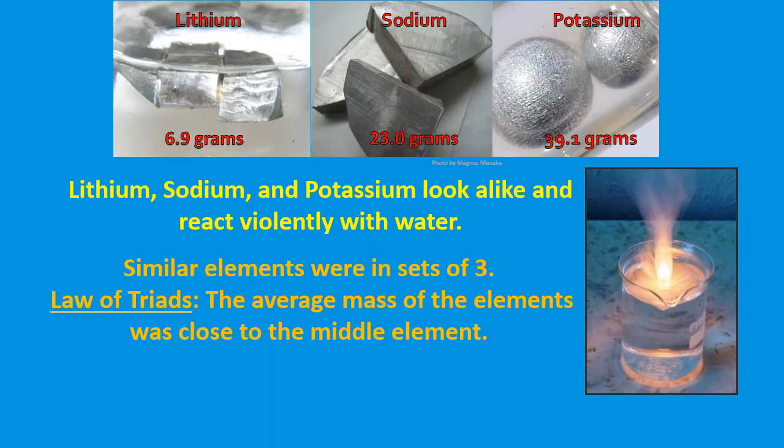They also realized that the average mass of the elements were close to that of the middle element, which became known as the law of triads. For example, lithium has a mass of 6.9 grams, sodium 23.0 grams, and potassium 39.1 grams. If we were to find the arithmetic mean or the average of these three masses, we will find that it lies very close to the middle one, which is sodium of 23.0.